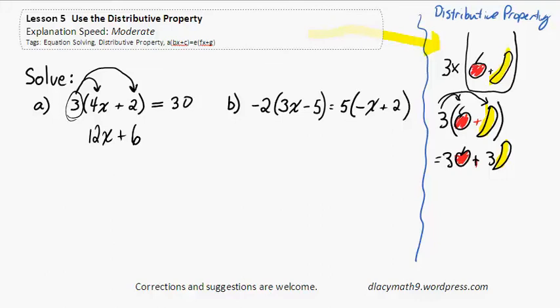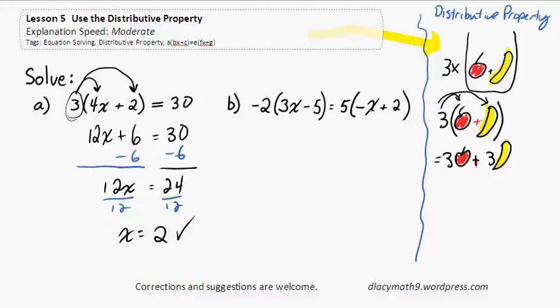Now my brackets are gone and I have a much simpler looking equation, which I will solve using the techniques that we've already been working with for some time. 12x is equal to 24, so it must be that x is equal to 2, and that's the answer using the distributive property.